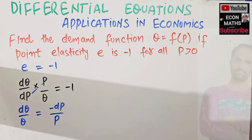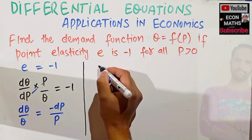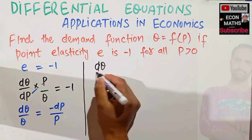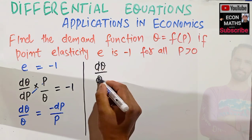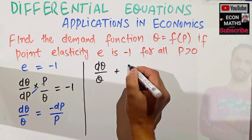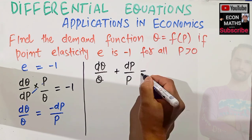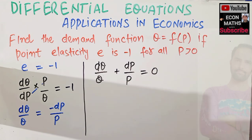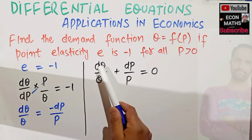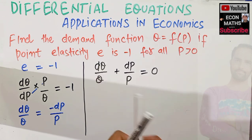I have simply transposed P upon dP to RHS, it will get reciprocated. Now transposing again here it will become plus dP upon P is equal to zero. Now we have dQ upon Q and dP upon P, so we have separated the variables.